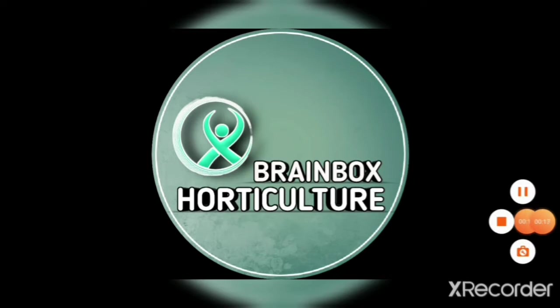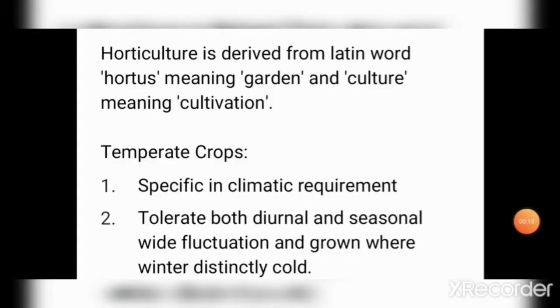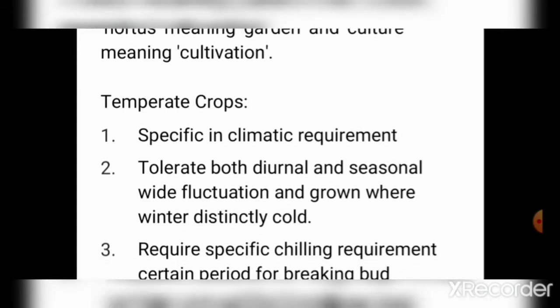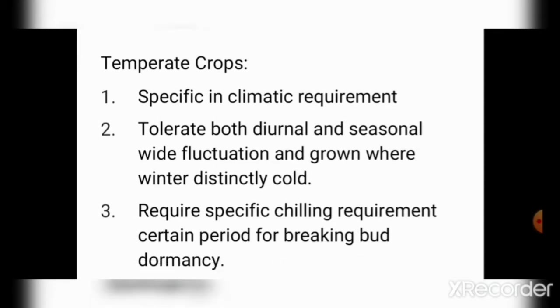First, let's start with horticulture. The term horticulture is derived from the Latin word 'hortis' meaning garden, and 'culture' meaning cultivation. In short, we can say it is garden cultivation. We have two crop types: temperate crops and tropical crops.